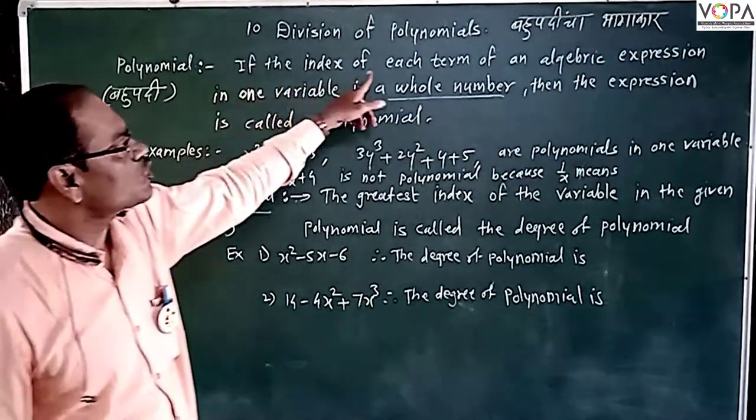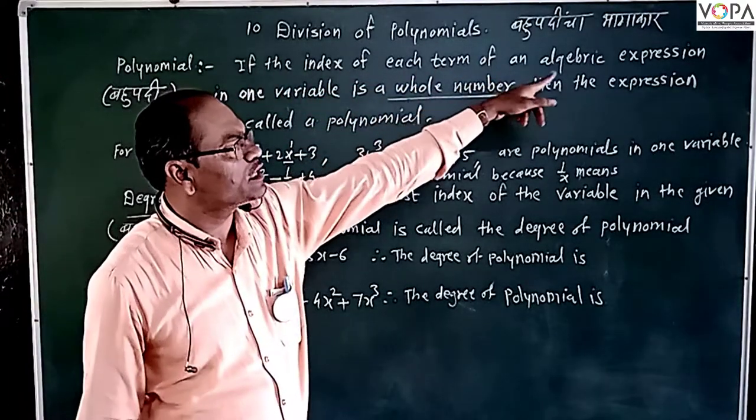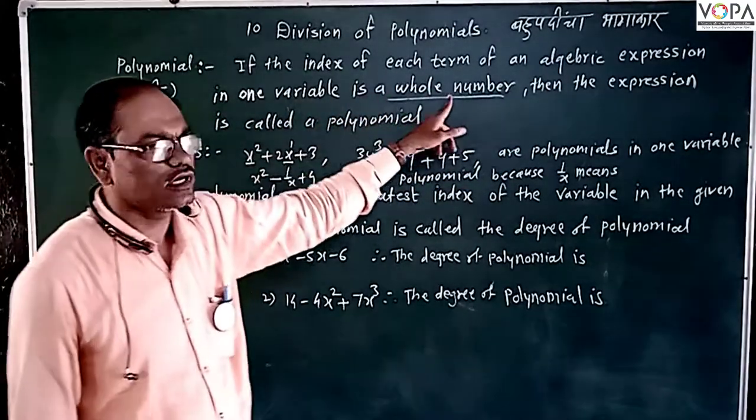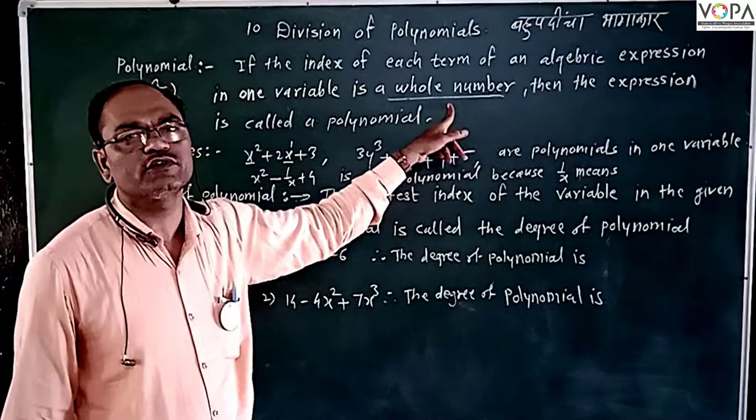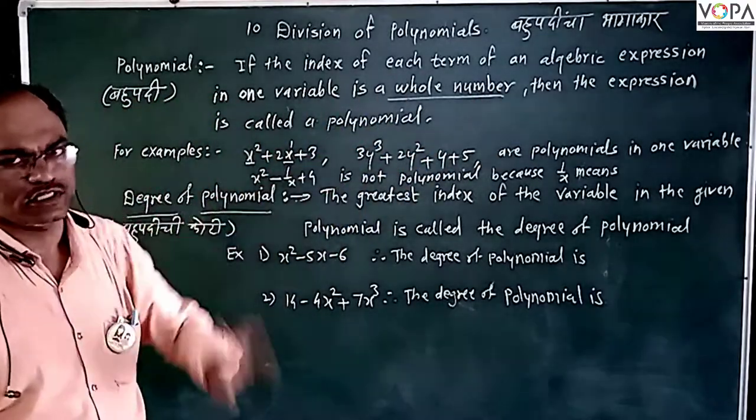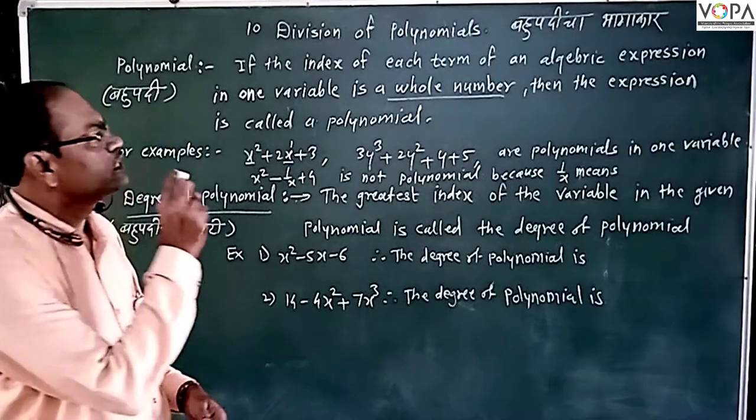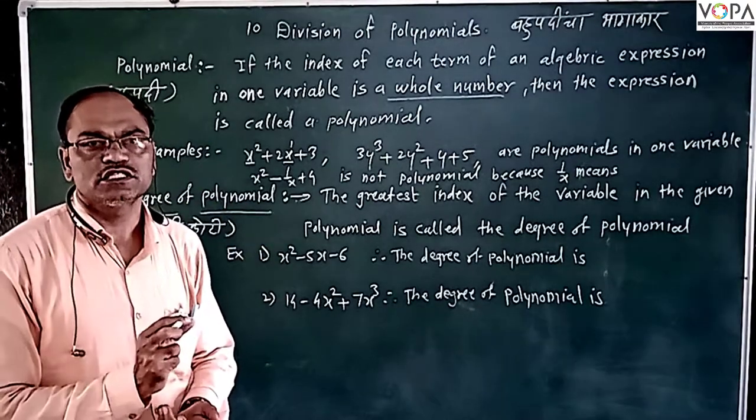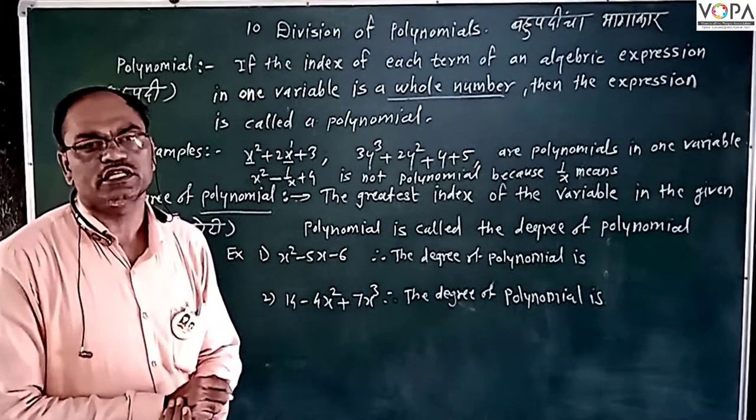If the index of each term of an algebraic expression in one variable is a whole number, then the expression is called a polynomial. So an algebraic expression in one variable where the index is a whole number is a polynomial.